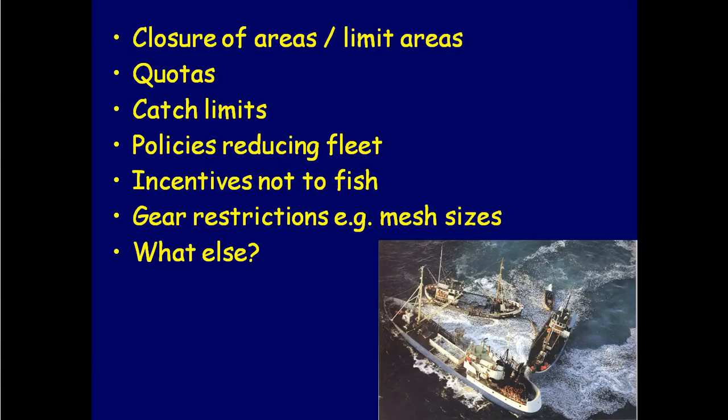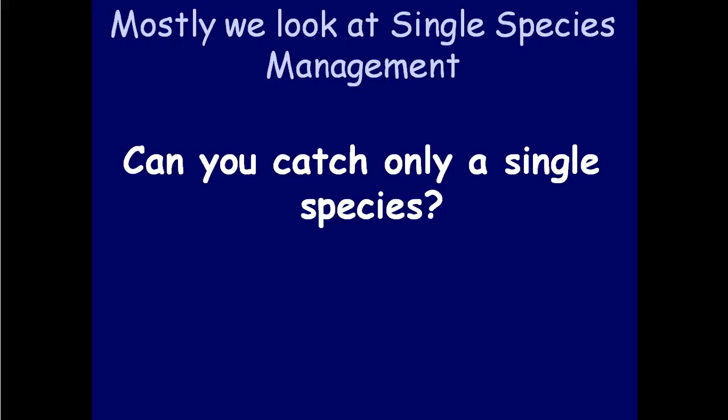Closure of areas, limit of areas, quotas, catch limits, policies, reducing fleet incentives not to fish, gear restrictions — these are the things we've talked about around fishing management over the term. But those are the traditional methods that have been used to try to stop overfishing, and mostly these are focused on single species.